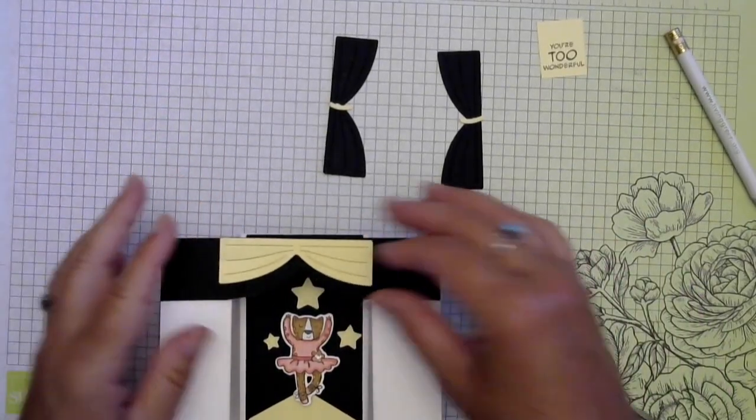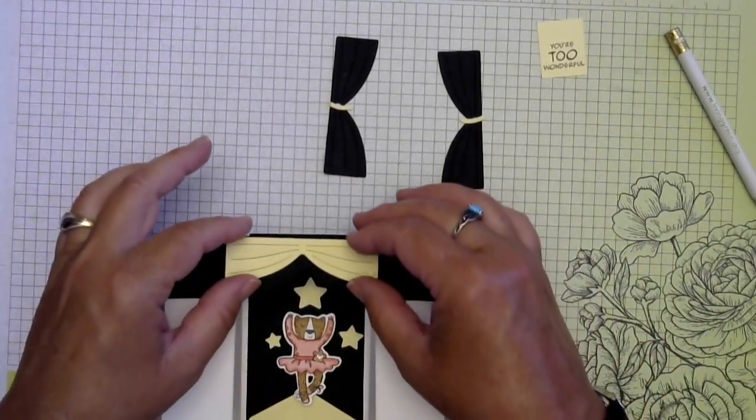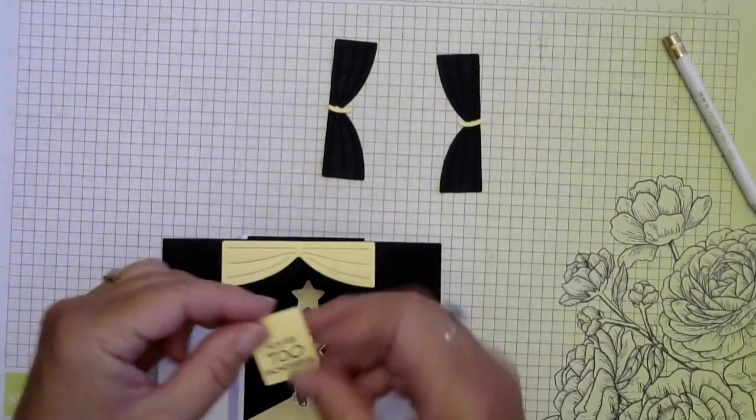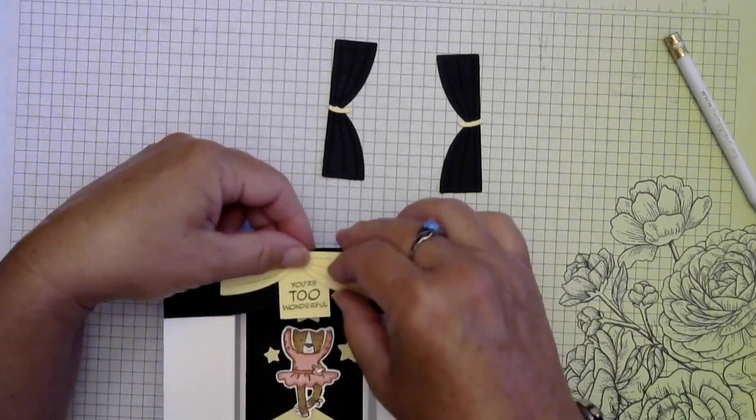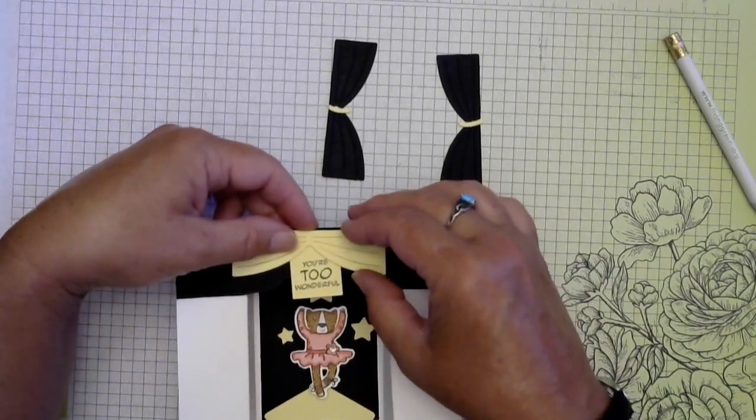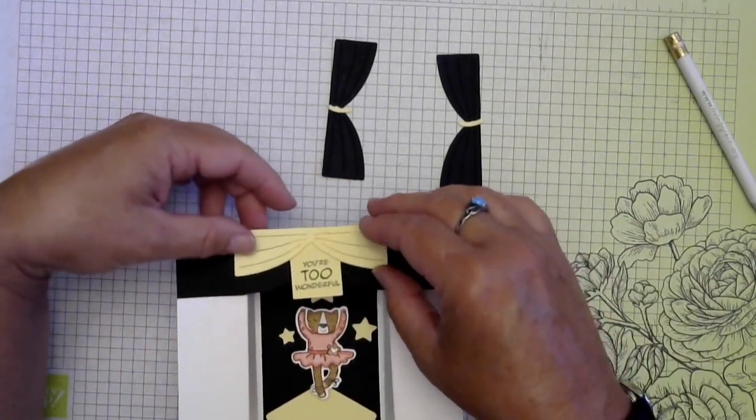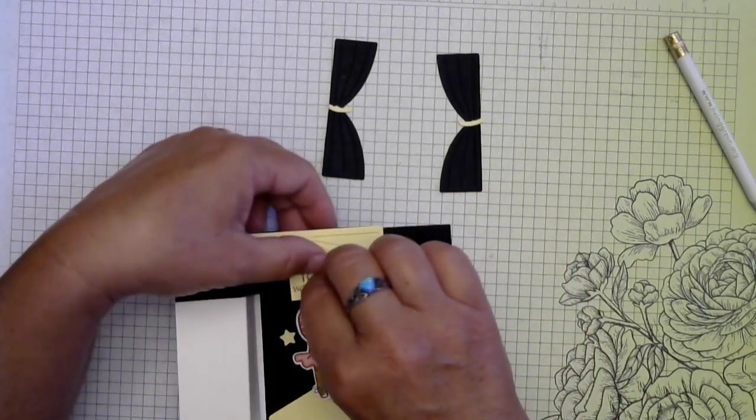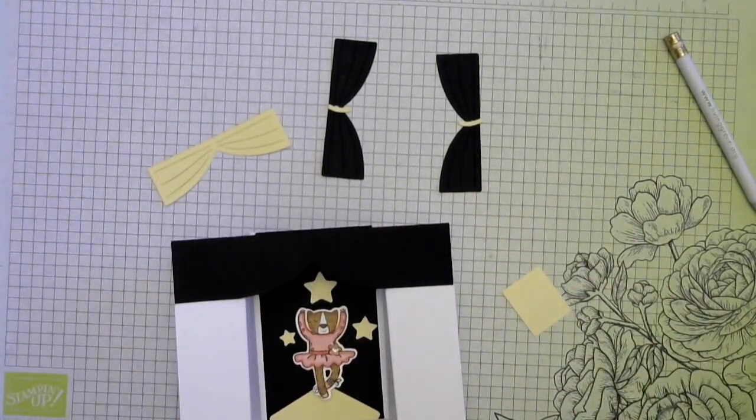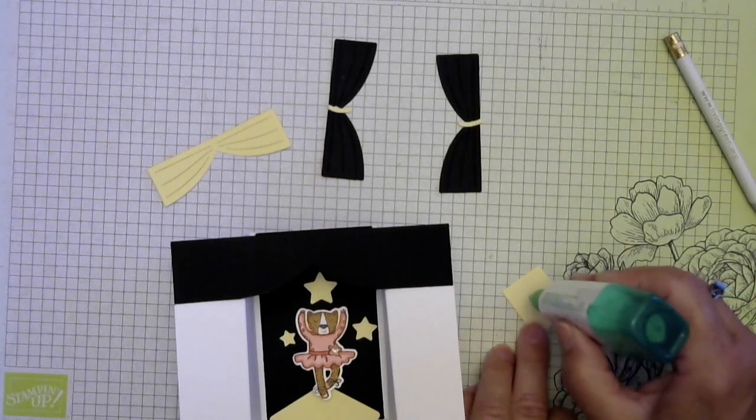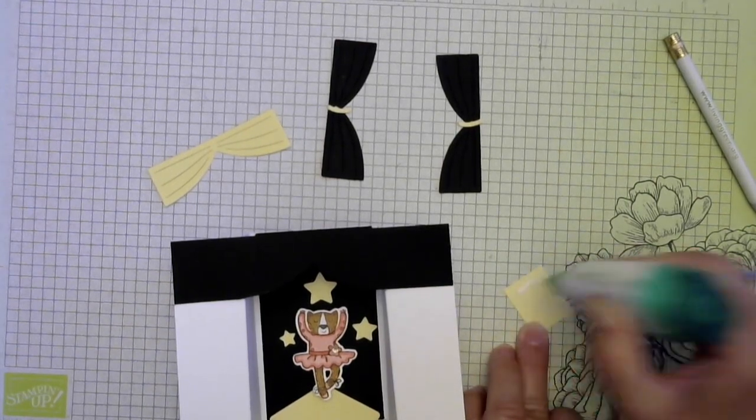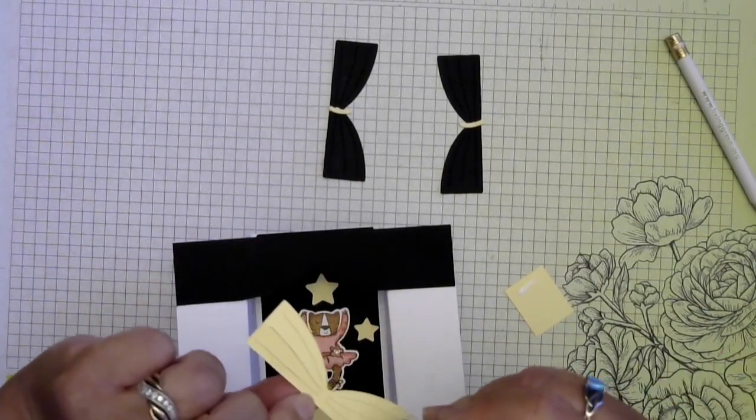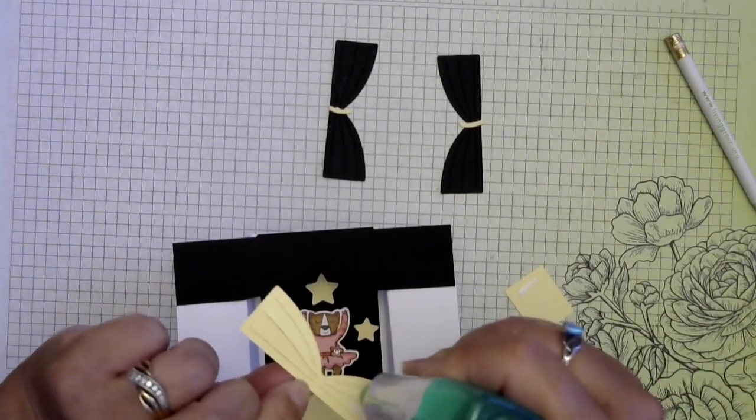And then we can go ahead and put our greeting on. You could put the greeting somewhere else too. I just kind of liked it hanging down like it was part of the curtain. So I'm going to use liquid glue for these so that I can wiggle them around as needed. A little glue on the top of this and then some on the edges here.